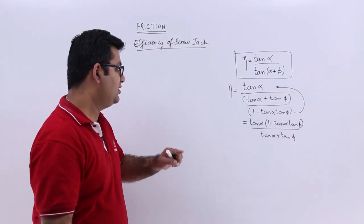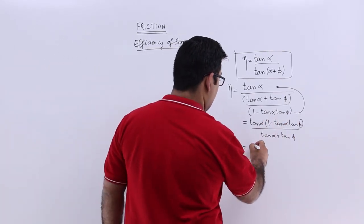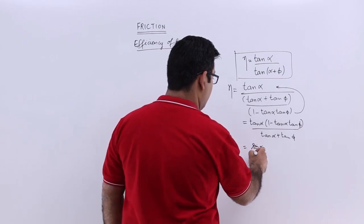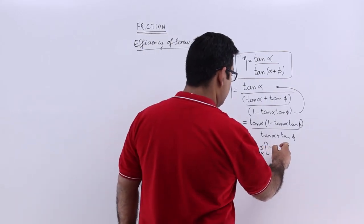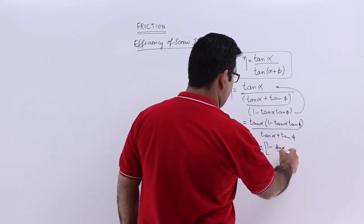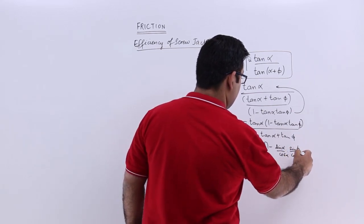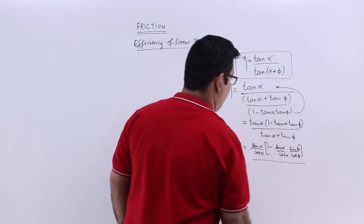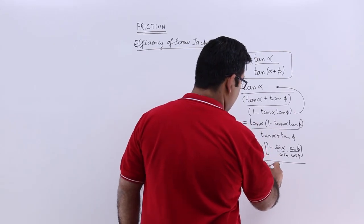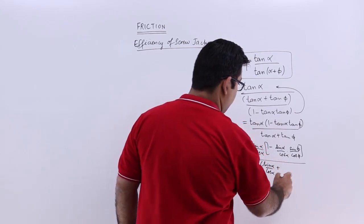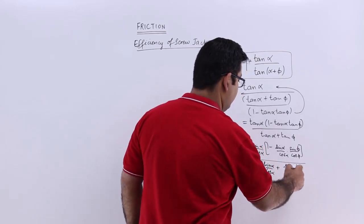Just replace tan by sin by cos everywhere. You will have sin alpha by cos alpha into 1 minus sin alpha upon cos alpha into sin phi by cos phi, divided by sin alpha upon cos alpha plus sin phi upon cos phi.